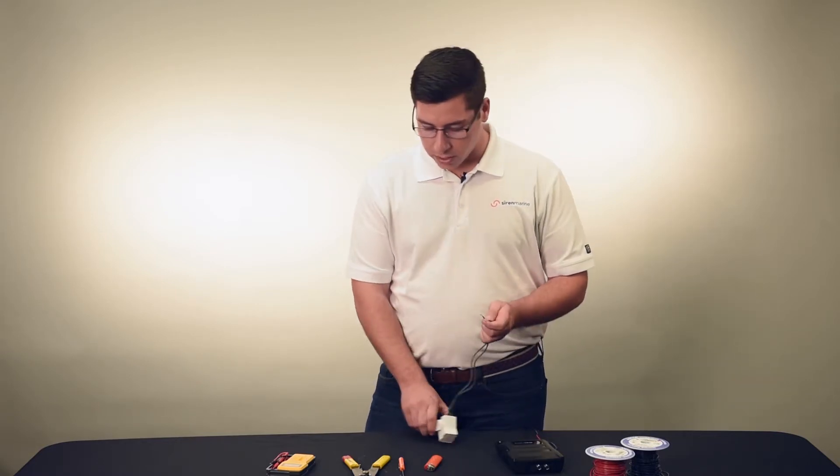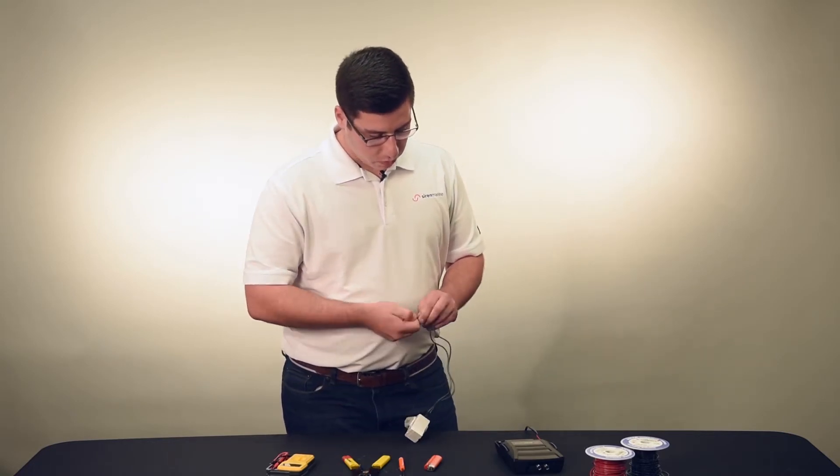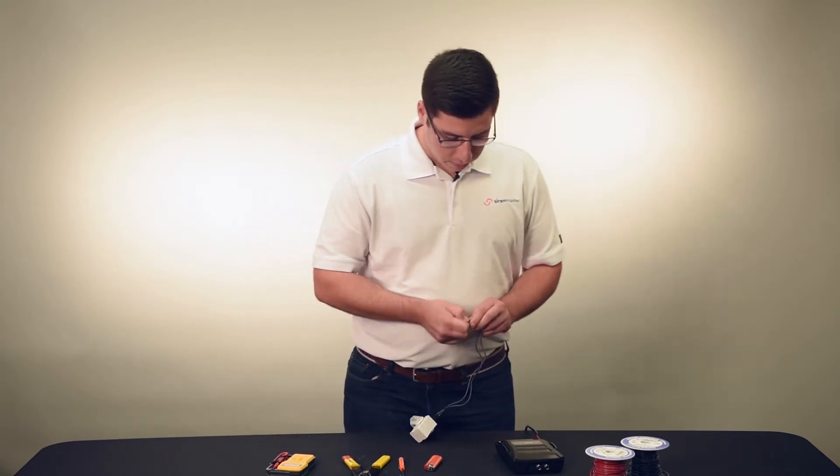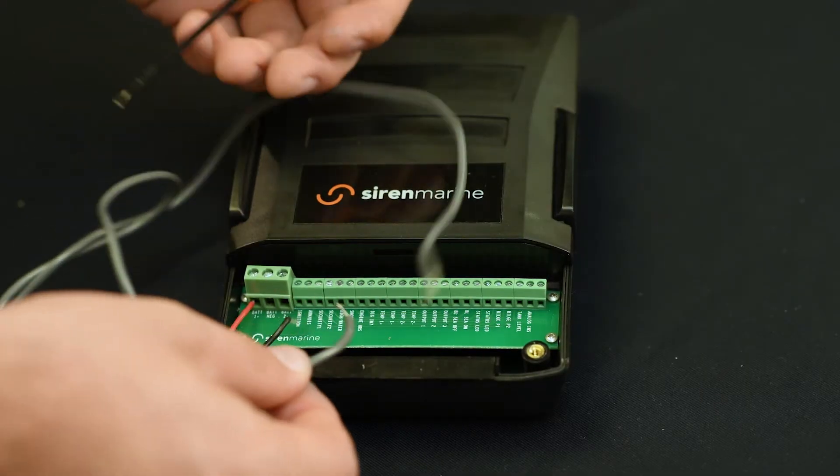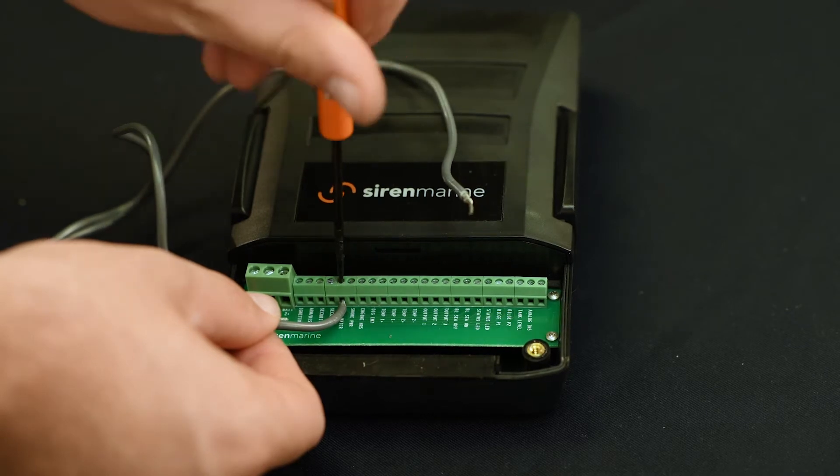I've already stripped this wire down and back. What I'm doing now is just twisting this small enough to get into the wiring inputs. I'm going to put this in the high water. Cinch that down.